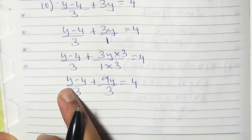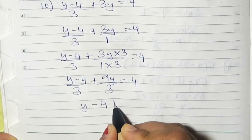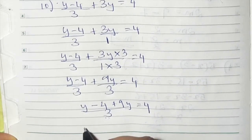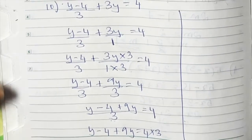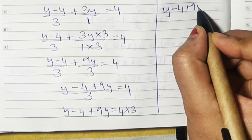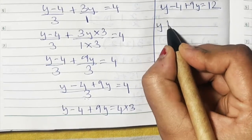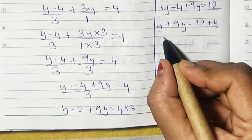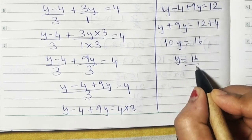Both fractions now have denominator 3, so we combine them: y minus 4 plus 9y upon 3 equals 4. The 3 crosses to the other side and becomes multiplied, so y minus 4 plus 9y equals 12. Like terms together: y plus 9y is 10y, and minus 4 goes to the other side giving 12 plus 4 is 16. So 10y equals 16, and y equals 16 upon 10.